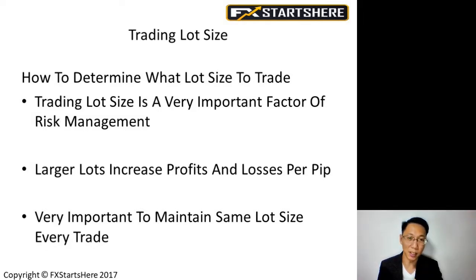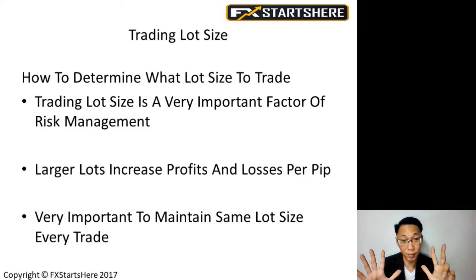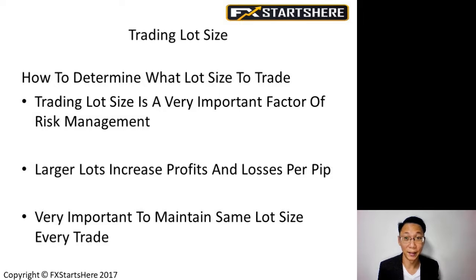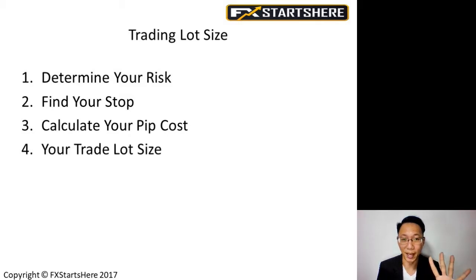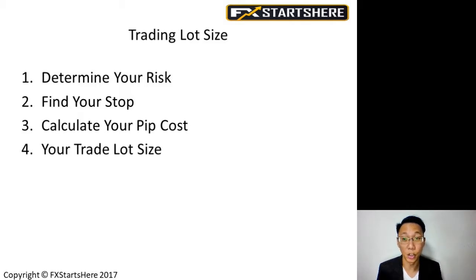The same goes for losses. If your account drops by 20% or more — for example, from $10,000 down to $8,000 — then you lower your lot size accordingly as well. So how do we calculate what our trading lot size should be? There are four steps: first, determine your risk; second, find your stop; third, calculate your pip cost; and fourth, get your trade lot size. I'm going to touch on each item in the next few slides.